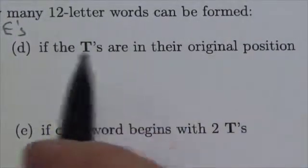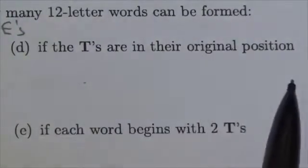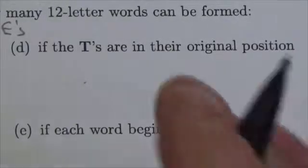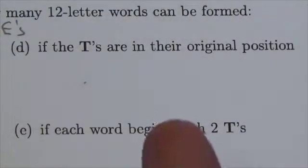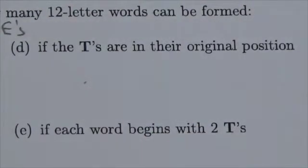Now this question says how many ways can we do this if the T's are in their original position? Now what that means is the T's have not moved. We are not dealing with the T's at all. So what we're doing is we're taking those out of the entire mixture here.